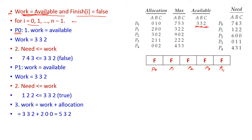Let us try to execute P0. Work equals available = [3, 3, 2]. We check whether Need[P0] is less than or equal to Work. The need for P0 is [7, 4, 3]. Since 7 is greater than 3, this condition is false. We cannot execute P0 currently.